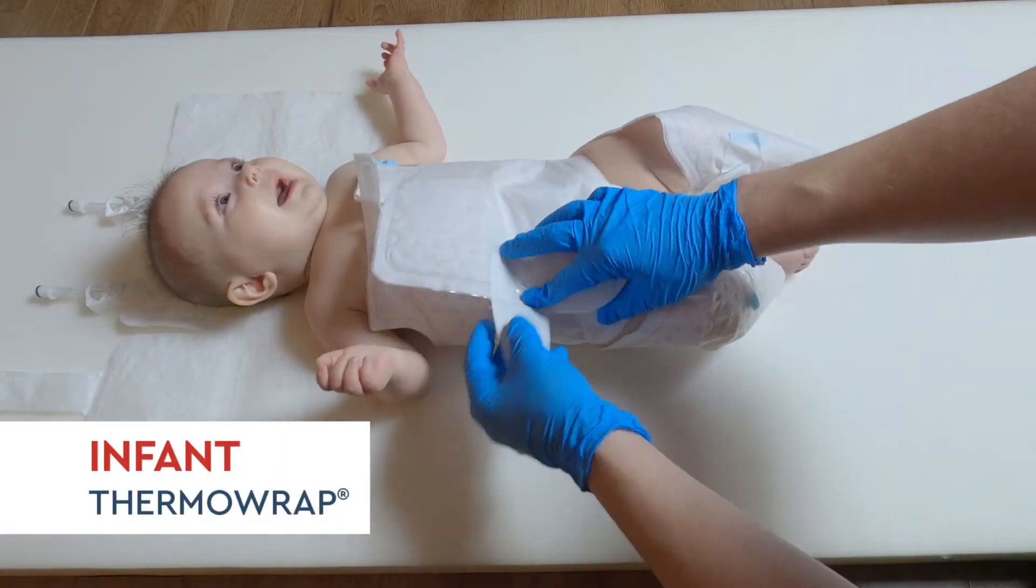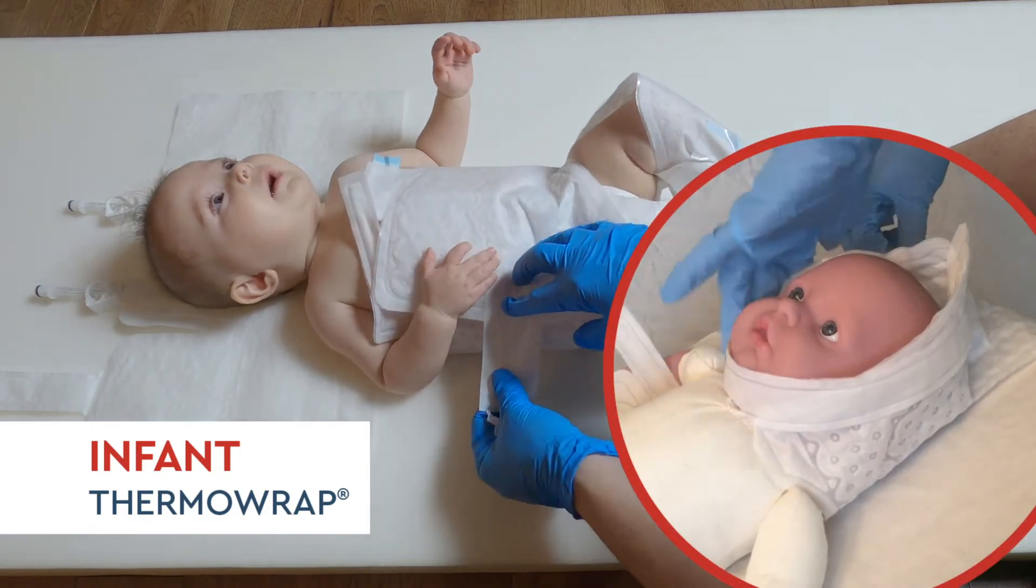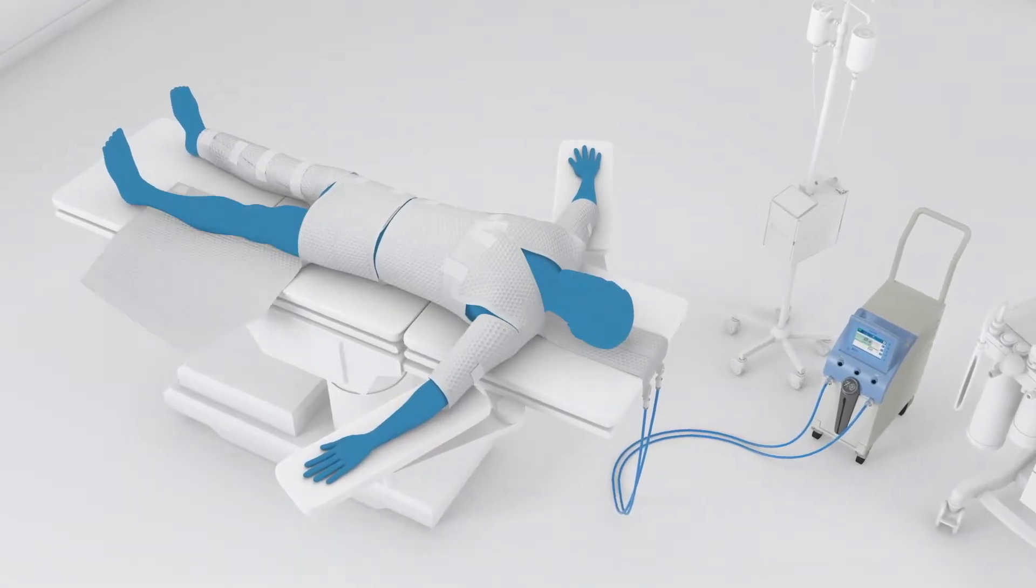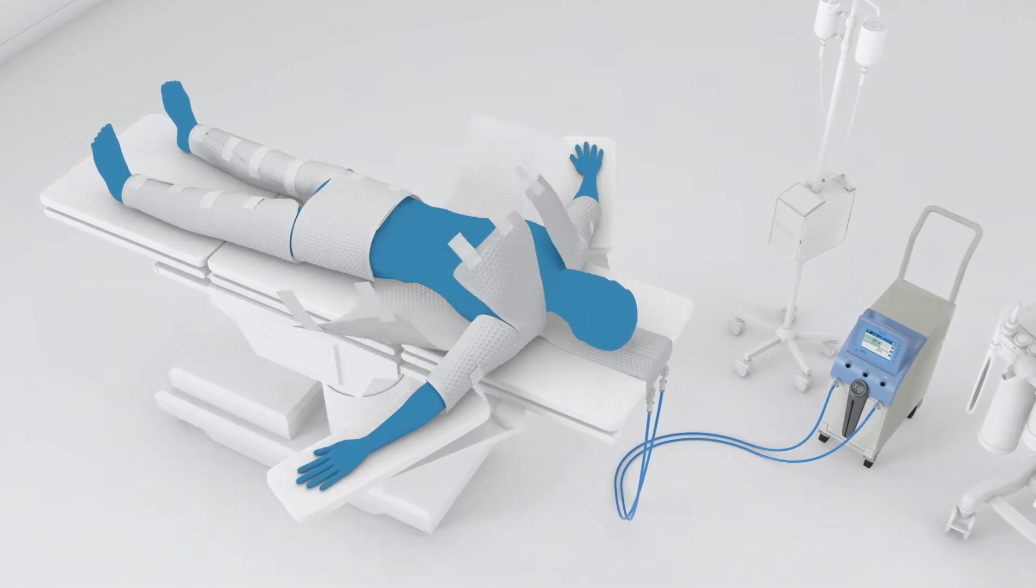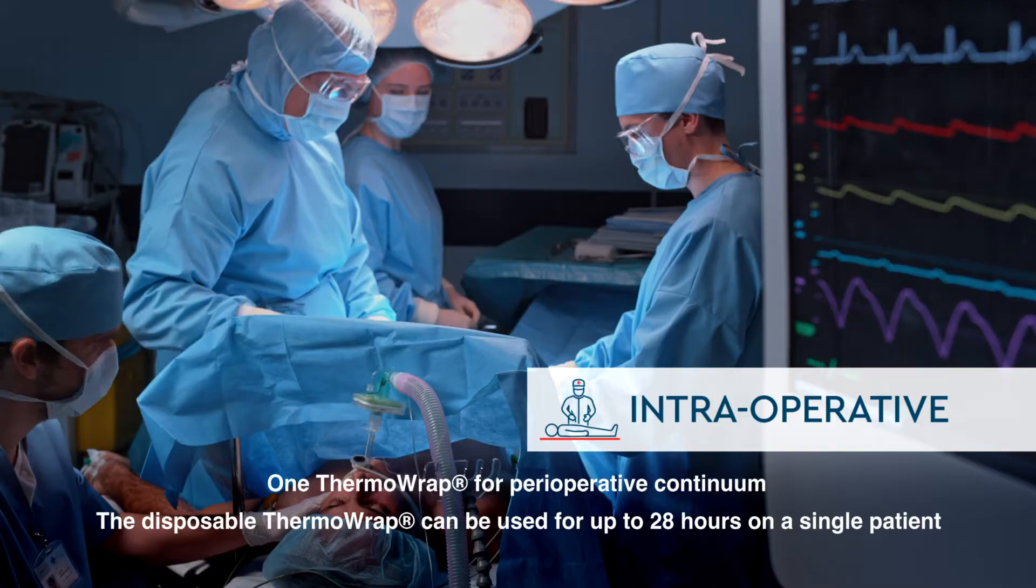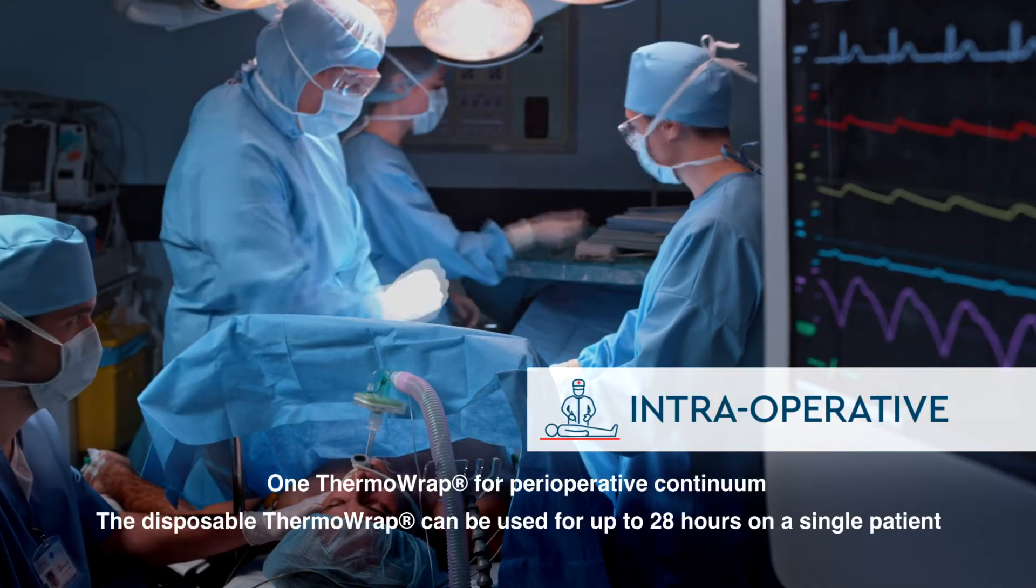Infant thermo-wraps cover the baby's head to reduce heat loss. All thermo-wraps can be adjusted and positioned as needed for the appropriate surgical procedure. And only one thermo-wrap is used per patient for the entire perioperative continuum.